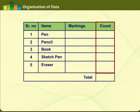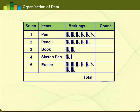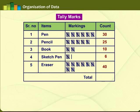In this method, first make a table with name of items, markings, and count of items. As the shopkeeper sells each item, he marks a line for it — one mark for each. After every four marks, mark a cross through them and count it as five. So every one crossed bunch of marks counts as five. At the end of the day the shopkeeper can evaluate: total pens is 30, pencils is 25, books is 10, sketch pens is 6, and erasers is 40. This method of organizing data is called tally marks.